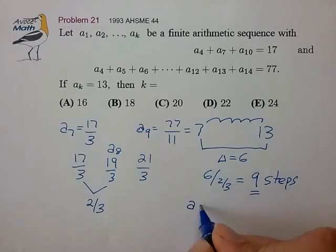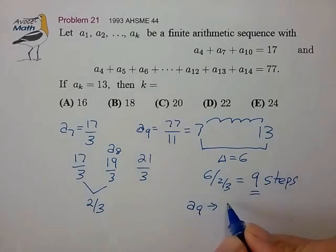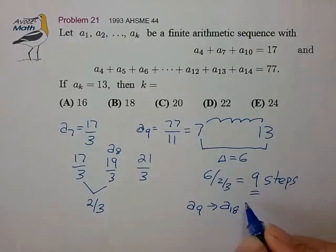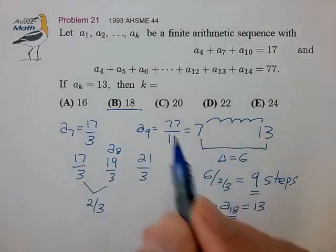So essentially we're going to have to go from A9 to A18 to arrive at a value of 13 and so the index value that we seek is 18 for choice B.